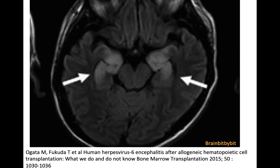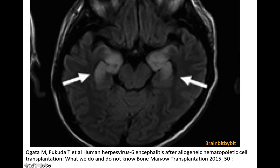In immunocompromised patients, there's another herpes virus — another old virus that goes for the old brain — and that is human herpes virus type 6, which also gives encephalitis of the amygdala and hippocampi. The sub-insular region is less often involved than in patients with herpes simplex virus type 1. This occurs in immunocompromised patients, so it might be a good differential in the paraneoplastic encephalitis of the patient with leukemia.